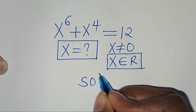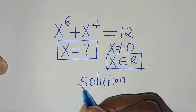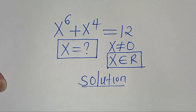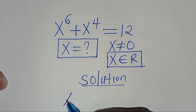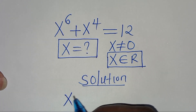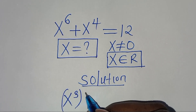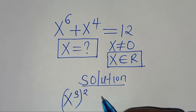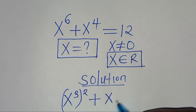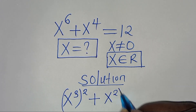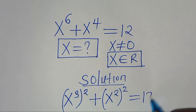Let's present a solution from here. We can express x to the power of 6 as x to the power of 3, raised to the power of 2, then plus x to the power of 4, which can be expressed as x to the power of 2 raised to the power of 2. This is equal to 12.